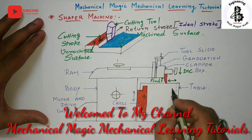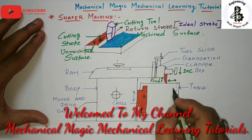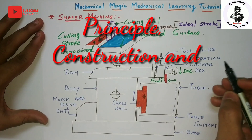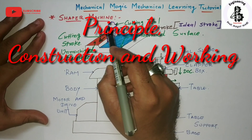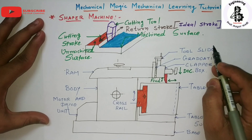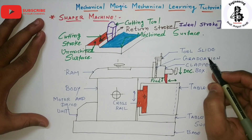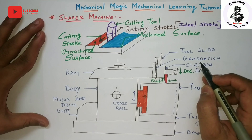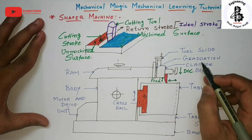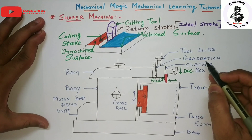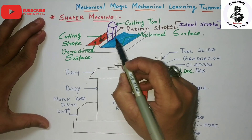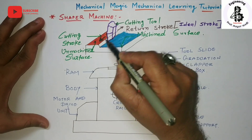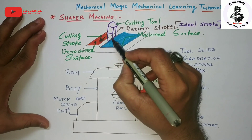Welcome to the YouTube channel Mechanical Magic Mechanical Learning Tutorials. In this video, I am talking about the general principle of shaper machines and how the shaper machine is used in the workshop for converting raw materials into different kinds of required shapes and sizes. In shaper machines, a single point cutting tool reciprocates onto the surface of the workpiece.